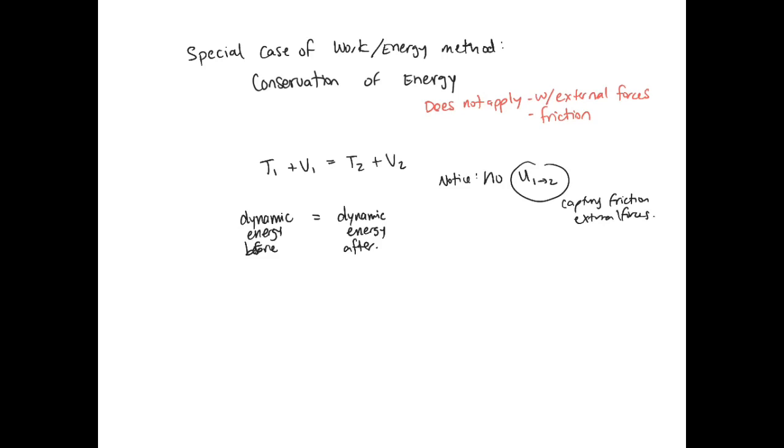So here remember our T1, our T's, these are our kinetic energy and our V's are the potential energy. Even though this equation looks very similar to what we were doing before, it's conceptually very different because now we're not considering gravity as the work that's being done, we're considering gravity as potential energy. And we're not considering the spring as the amount of work that it does, we're considering a spring as having potential energy.